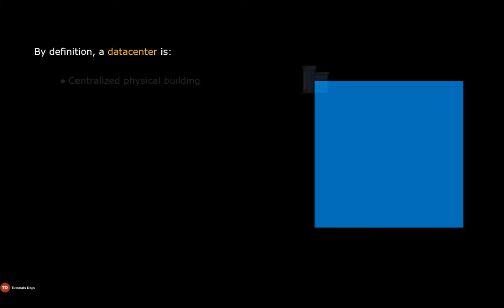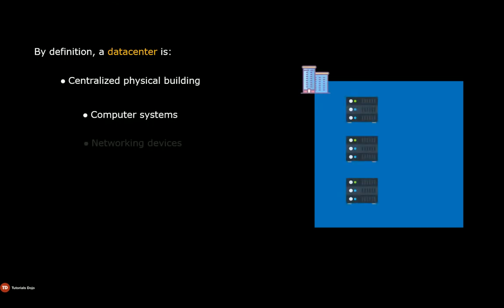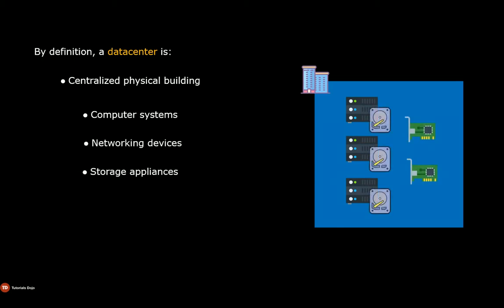To start, we need to understand first what is a data center. A data center by definition is a centralized physical building that houses hundreds of computer systems, networking devices, and storage appliances.